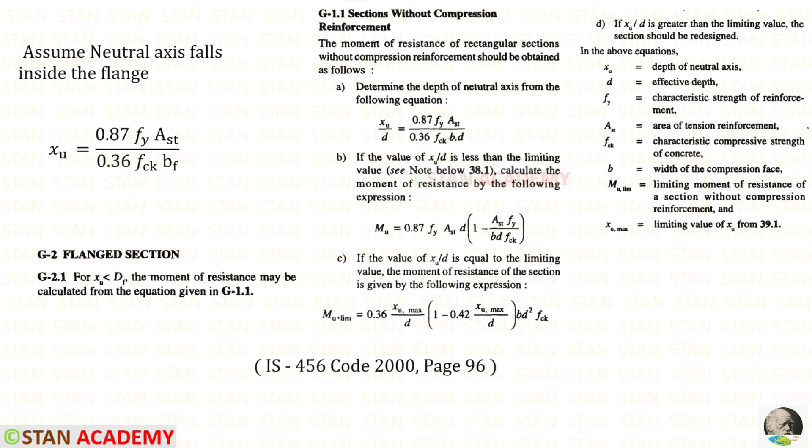First we have to assume the neutral axis falls inside the flange. We need to open the IS 456 code book page number 96. We have to copy this equation. In both of the denominators we have the effective depth D. We can eliminate that.